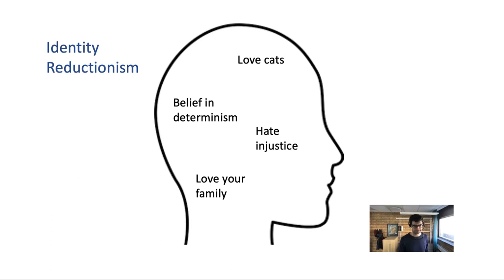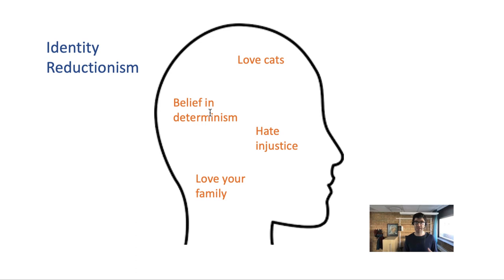A problem with identity reductionism is that it's difficult to tell which mental states you are identical to. If you were identical to all of your mental states, losing any one of them would mean you go out of existence. But intuitively, for many mental states you could lose them and still be you. For example, if you changed your mind tomorrow and decided determinism was false, or that you actually disliked cats, losing those mental states wouldn't mean you cease to exist.